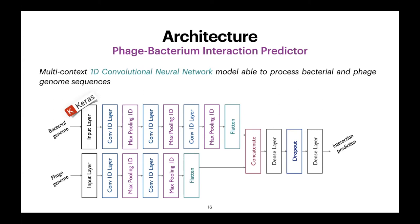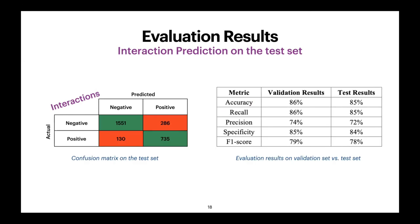Applying this approach, we obtained results on the test set of 35 percent of the data. Across the full set of bacterial strains and phages in our dataset, we obtained precision ranging from 74 to 72 percent, accuracy of around 85 to 86 percent, and F1 score of around 80 percent.